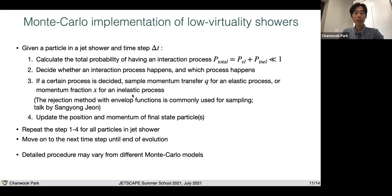To sample new momentum, you need a differential transition rate. The rejection method with envelope function is commonly used for the sampling process. Note that the rejection method was discussed by Sangyong earlier this week. Finally, you need to update the position and the momentum of the final state particles based on the sampling.